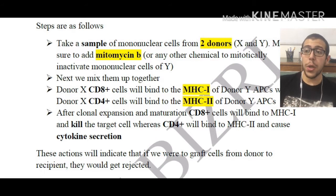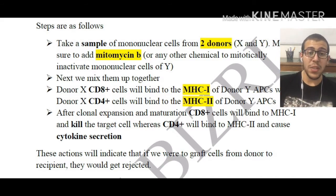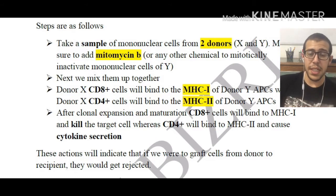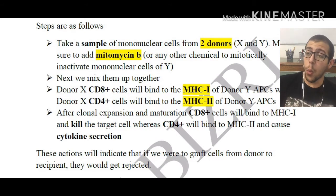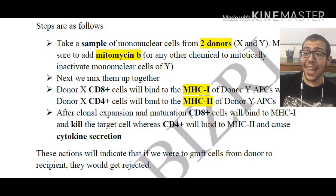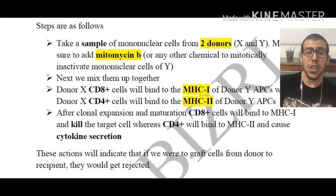Next we're going to be mixing them together. Donor X's CD8+ cells, that means the cytotoxic T cells, are going to be binding to the MHC class 1 of donor Y's APCs, while donor X's CD4+ cells, the T helper cells, are going to be binding to the MHC class 2.